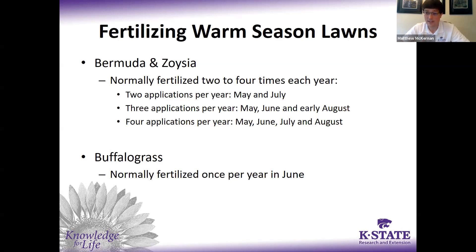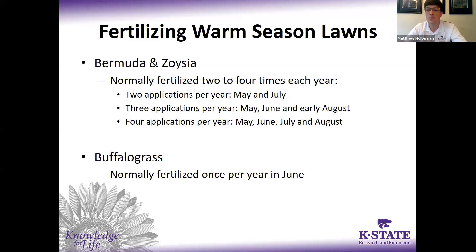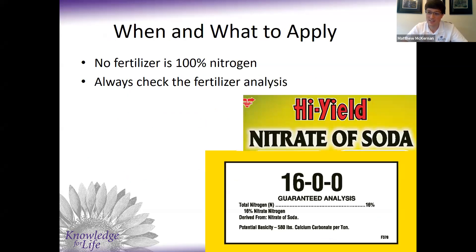For warm season lawns like Bermuda grass, buffalo grass, or zoysia, now is not the time to fertilize because they're going to start to go dormant for the winter. Fertilizing Bermuda or zoysia is typically done two to four times a year — May, June, July, and early August — and we want to be done fertilizing by August 15th or end of August so we're not pushing growth right before winter. With buffalo grass, typically you only fertilize once per year in June. What we're talking about now is more relevant to Kentucky bluegrass and tall fescue lawns.